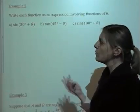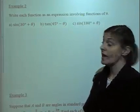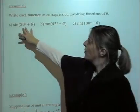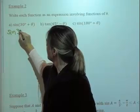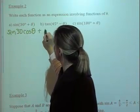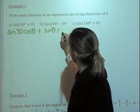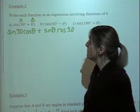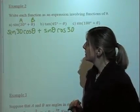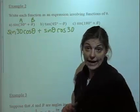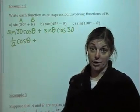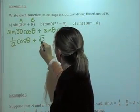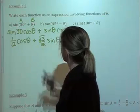Example number two: we want to write each function as an expression of theta. We're going to use our sum identity for sine. We plug in 30 for A and theta for B. We know sine of 30 is 1/2, and cosine of 30 degrees is √3/2, so the expression becomes (1/2)cosθ + (√3/2)sinθ.